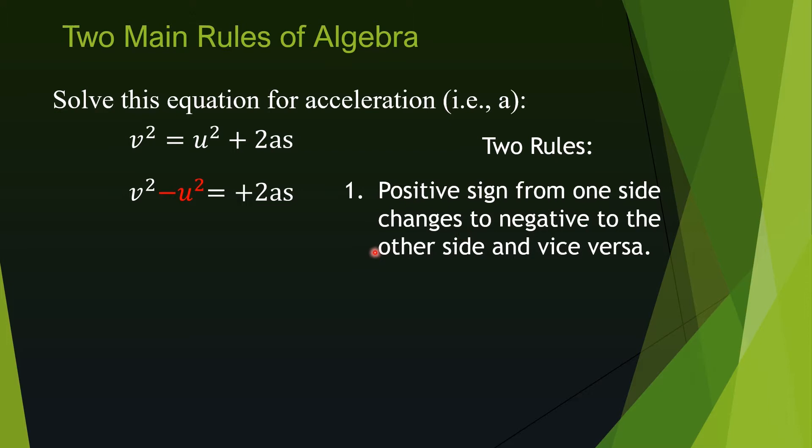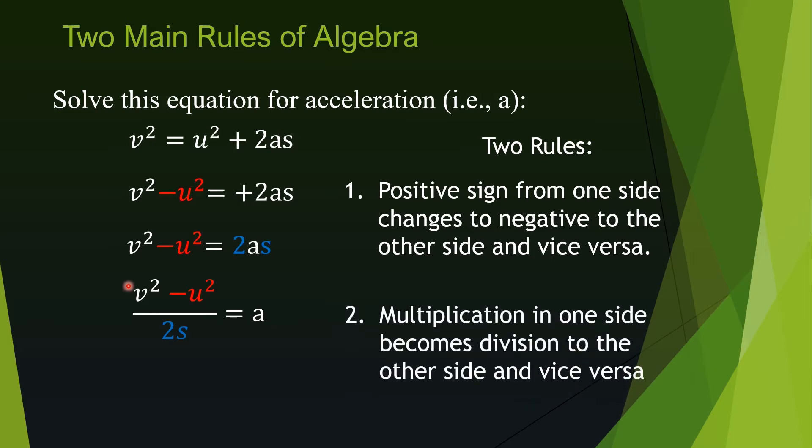Now to further isolate a, we need to move this 2 and s from this side to the other side. The 2 and s are multiplying a, so when we move them to the other side they will divide everything on the other side, and that is rule number two.